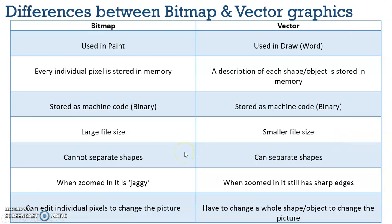For a bitmap image you can't separate the shapes — if you draw freehand in Microsoft Paint, you can't then change or move the individual shapes. Whereas in Microsoft Word, if you draw a rectangle, a circle, and a triangle, you can move them all across the screen and separate them no problem. For a bitmap graphic when you zoom in, it appears quite jaggy around the edges — that's how we determine resolution quality. Whereas for a vector graphic, if you zoom in, it doesn't lose any quality around the edges and still has really sharp edges. Finally, for bitmap graphics you can edit individual pixels to change the picture, whereas for a vector graphic you would have to change the whole shape or object to change the picture.